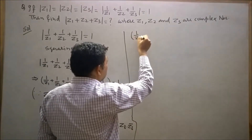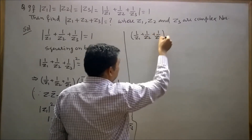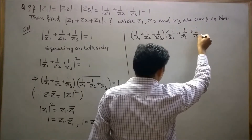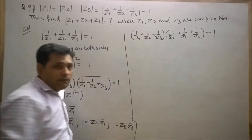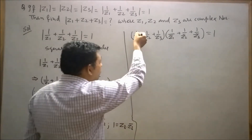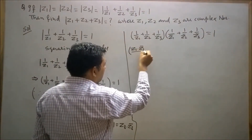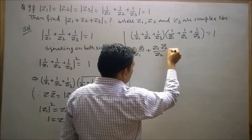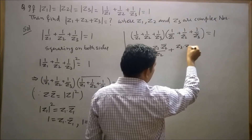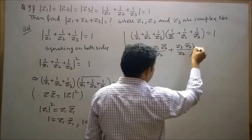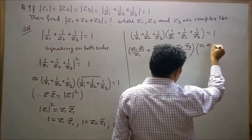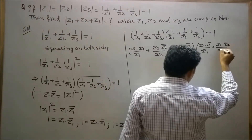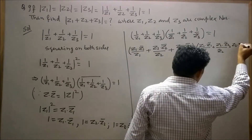So we have (1/z1 + 1/z2 + 1/z3) times (1/z1-bar + 1/z2-bar + 1/z3-bar) equals 1. Here, 1 can be replaced using those three relations: 1 equals z1·z1-bar, so 1/z1 equals z1-bar. Similarly, 1/z2 equals z2-bar, and the expression becomes (z1·z1-bar)/z1-bar + (z2·z2-bar)/z2-bar + (z3·z3-bar)/z3-bar.